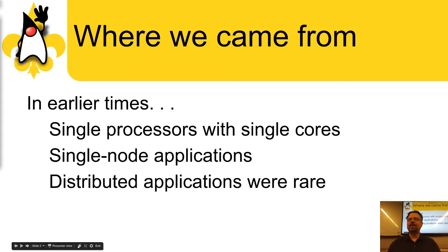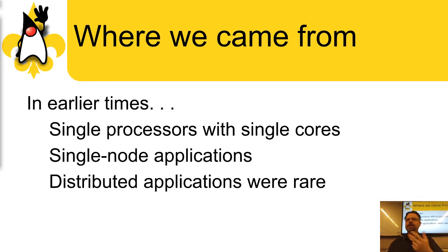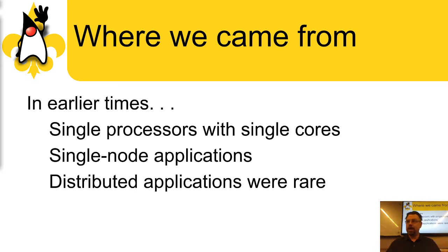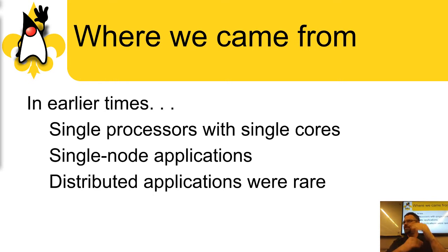As processors got faster, we wanted to get more use out of them. Single programs running back in the days of DOS or old-school Unix couldn't really tie up a CPU full-time. So they started implementing multi-tasking operating systems like Multics, Unix, Windows, Mac OS, and BSDs, so they could do time-slice multi-tasking — take a program, run it for a few ticks, switch to a different process, run it for a few ticks, and so on, so you could run multiple applications and use CPU time more efficiently.